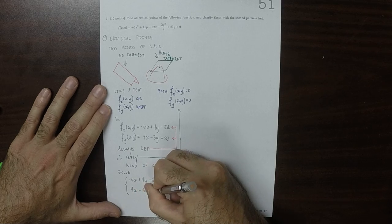Let's solve the system of equations. So we want to solve both partials equal to 0. So negative 6x plus 4y minus 32 is equal to 0. At the same time as 4x minus 3y plus 23 is equal to 0. And I'll number this as equation 1, and this one as equation 2.